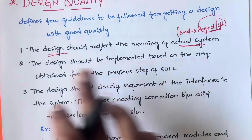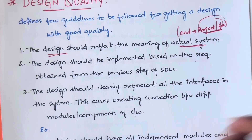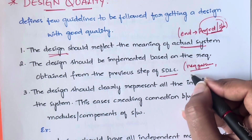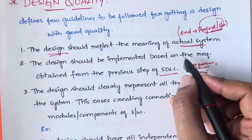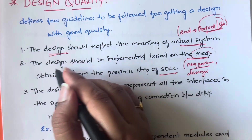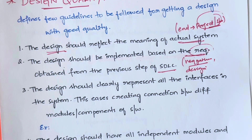Next, the design should be implemented based on the requirements obtained from the previous step of the SDLC. In the SDLC, once you gather requirements you move to designing. Whatever requirements you gathered in the requirements-gathering step, your design should be based on those requirements only. You should not miss any of those requirements, and you should not add any additional requirements as per your wish — you have to strictly follow those requirements only.